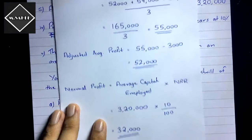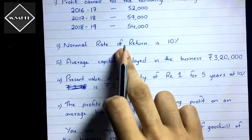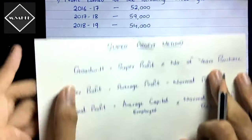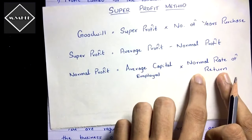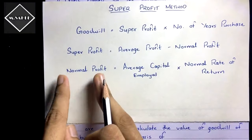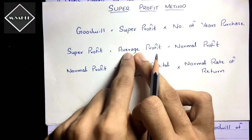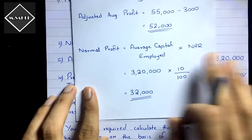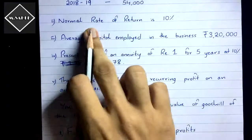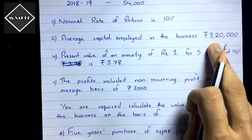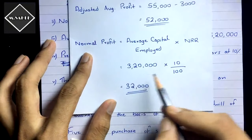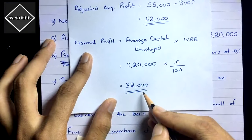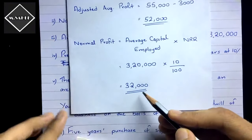After deducting ₹3,000 from ₹55,000, the adjusted average profit is ₹52,000. Now we calculate normal profit. The question gives: Normal Rate of Return = 10% and Average Capital Employed = ₹3,20,000. Normal Profit = ₹3,20,000 × 10/100 = ₹32,000.